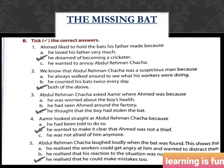The second one is: we know that Abdulrahman's cha-cha was a suspicious man because — option A says he always walked around to see what his workers were doing, and option B says he counted his bats twice every day. Both of the above — option C — is the correct answer for the third one: Abdulrahman's cha-cha asked Amir where Ahmad was because option C is correct: he thought that the boy had stolen the bat.